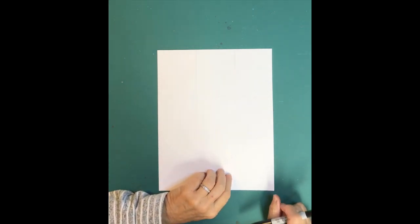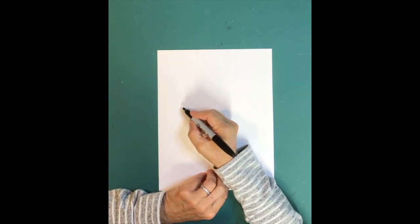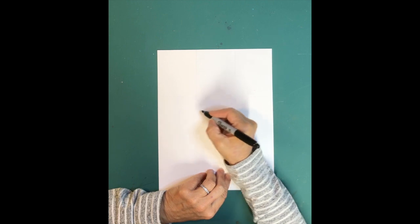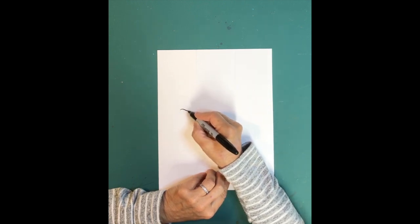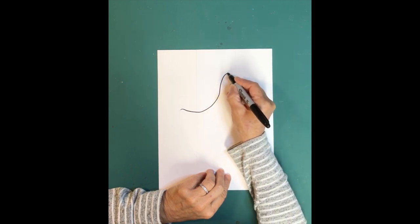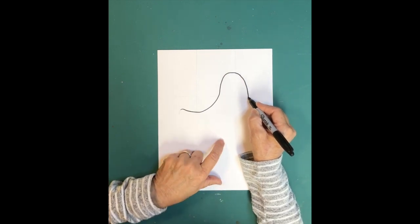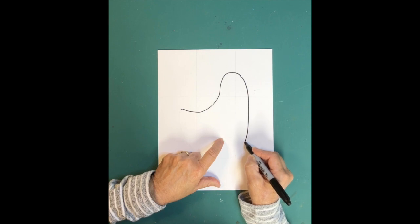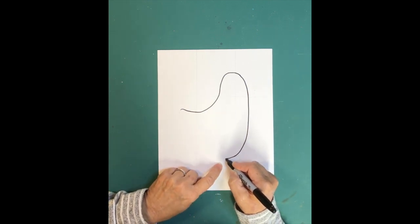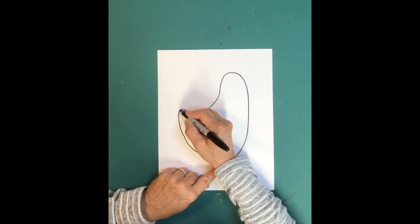We're going to be starting by drawing the body of the chicken, and this chicken is going to be taking up most of the paper, so she is rather large. Your first line is going to be a swoop up, making a line that goes up like that. Then you're going to start coming down, and this is going to be the front part of her body right here. Then you're just going to bring your pencil or your pen and come all the way up and meet her tail.